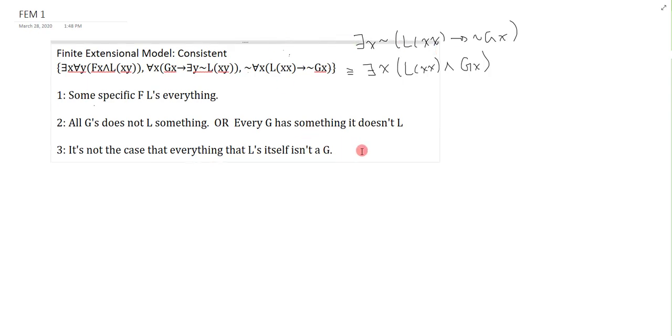It turns out that these two sentences are equivalent. So when I go back to my translation I don't want to use it's not the case that everything that l's itself is in the G. I'm just gonna say something l's itself and is a G. And this is far easier to work with.